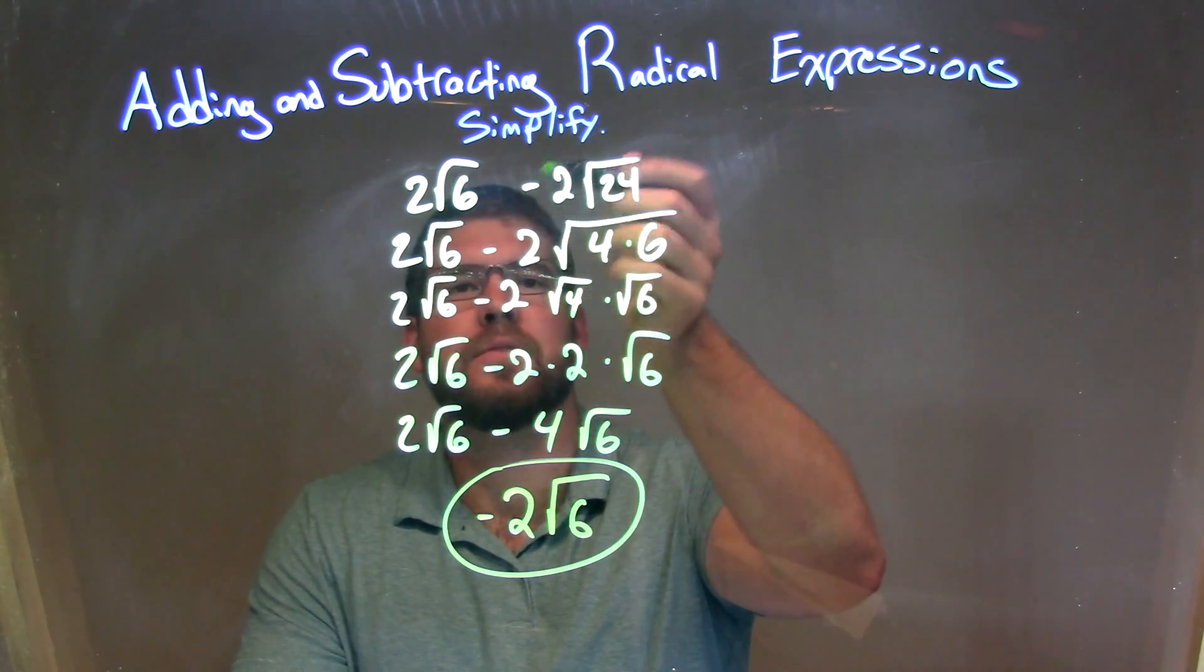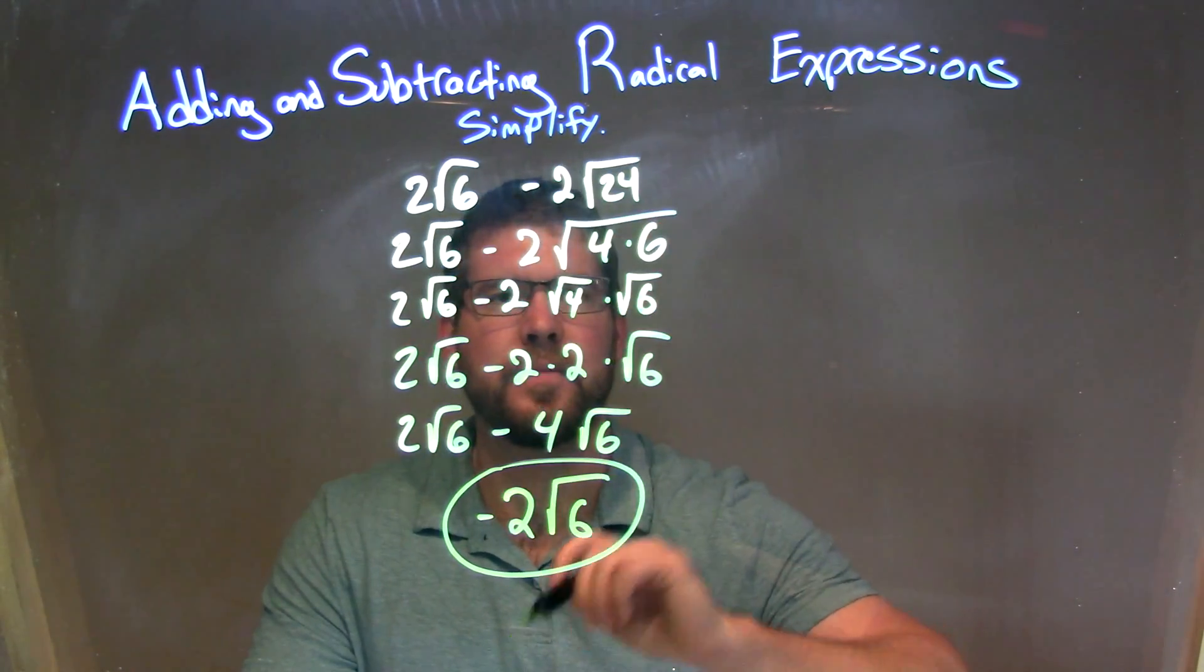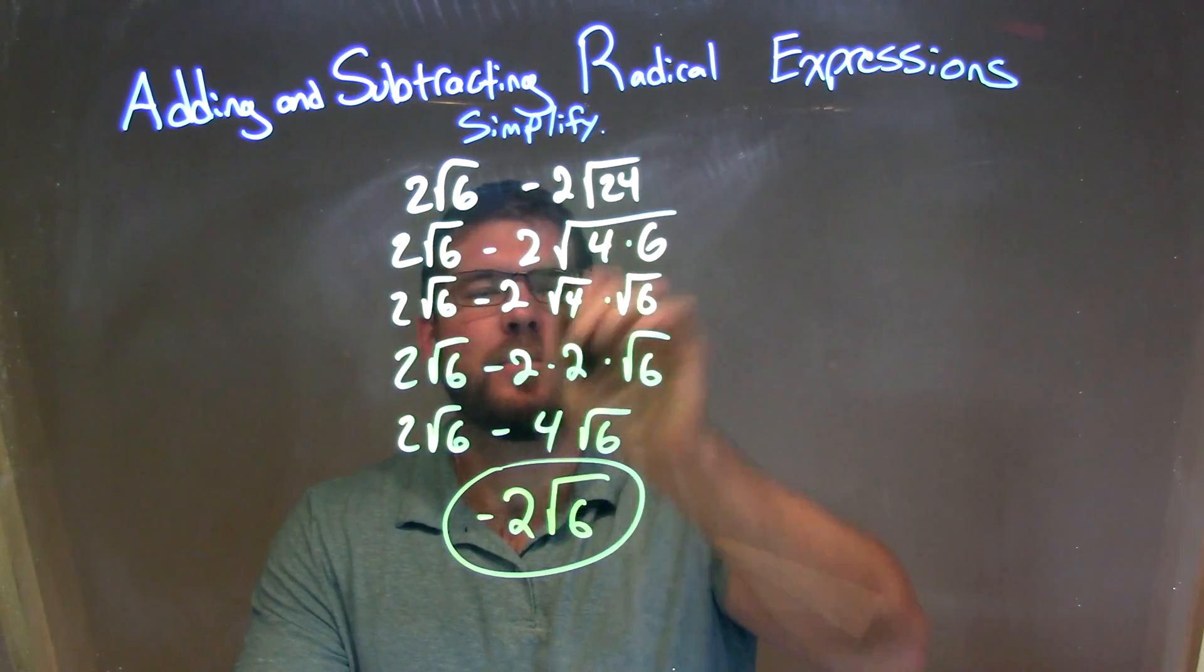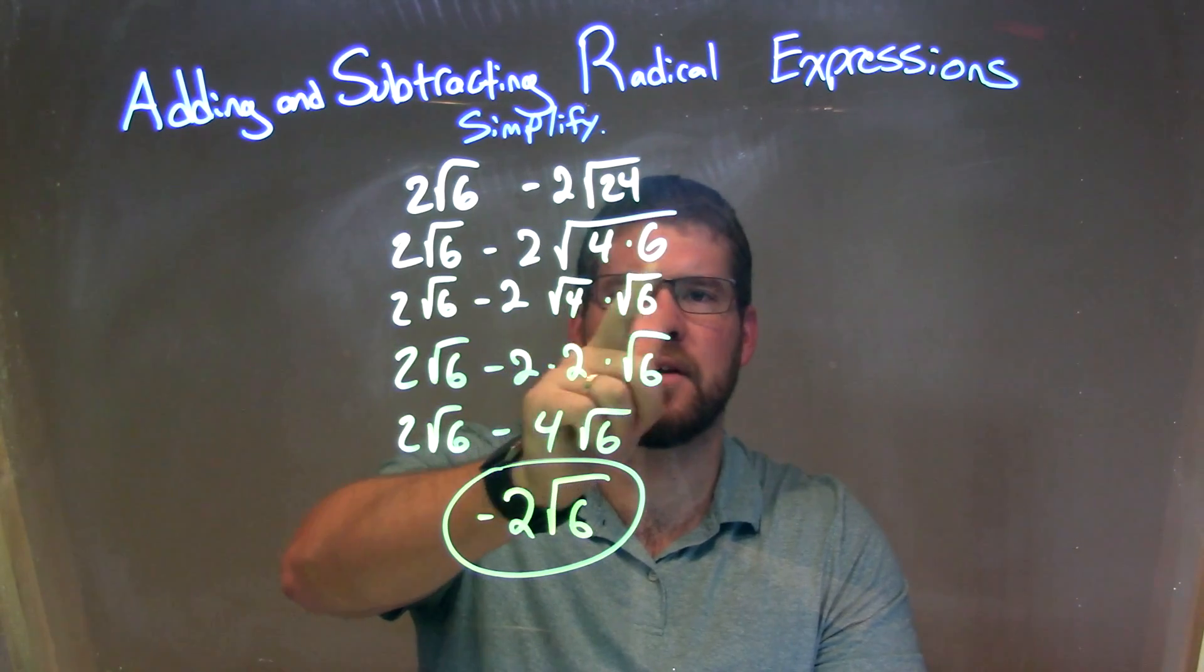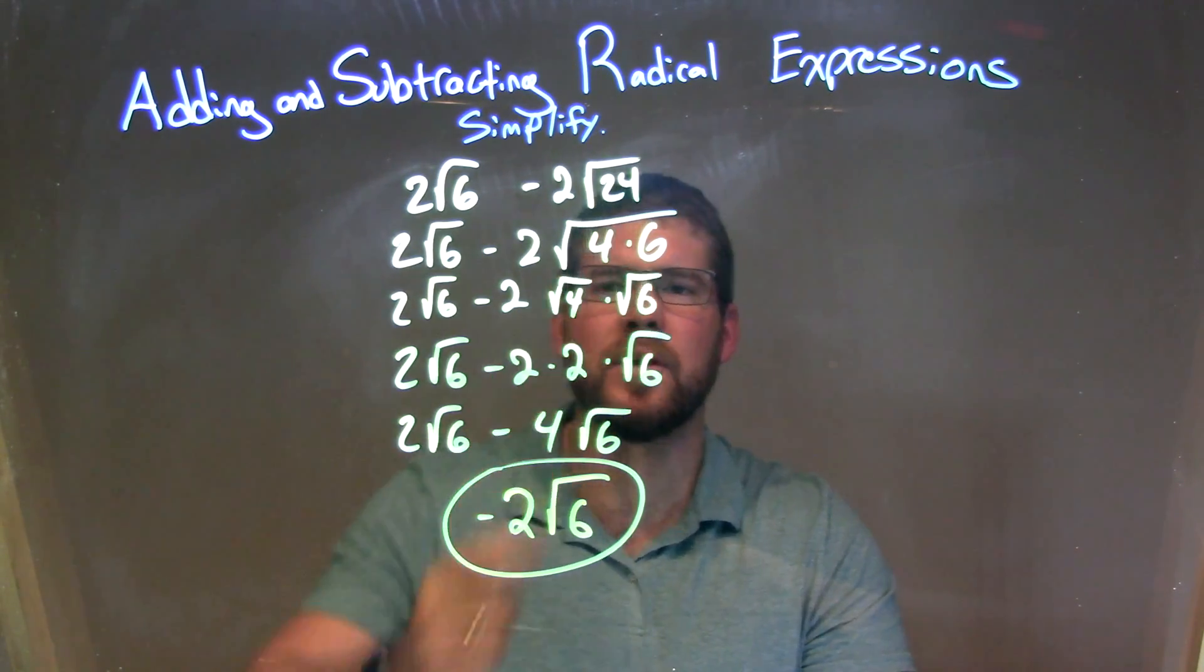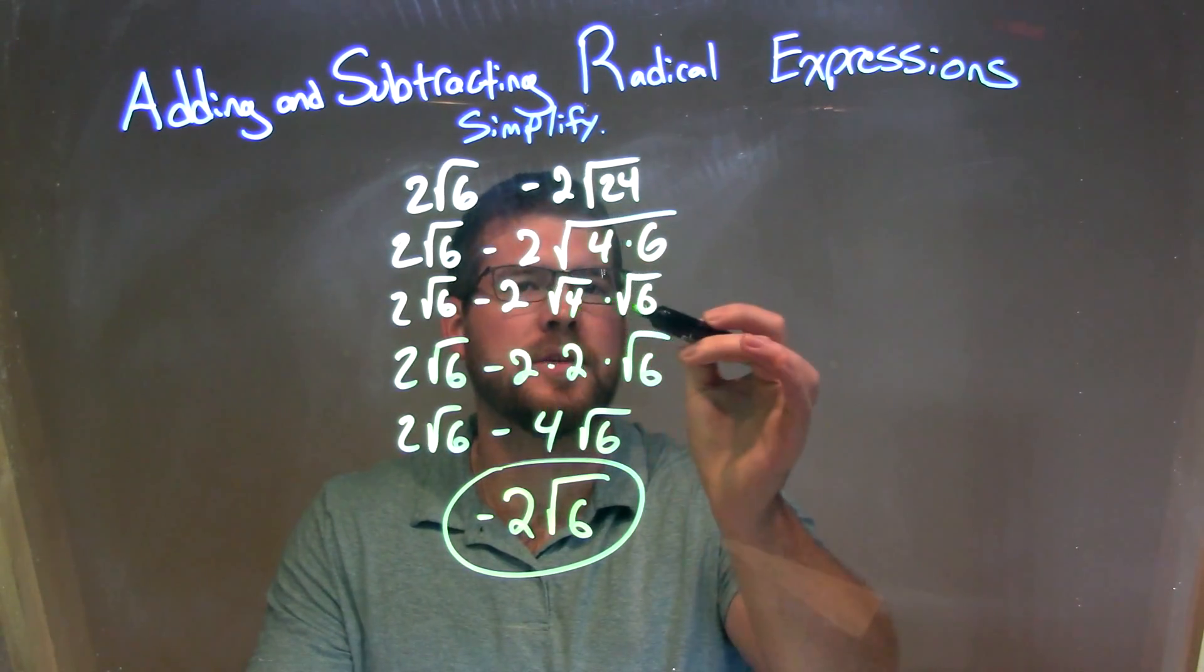So let's recap. We're given 2 square root of 6 minus 2 square root of 24. So I wanted to see if I could get these to be the same square root as the square root of 6 specifically. Well, 24 is 4 times 6, so I just broke it out like that. Then I can rewrite this to have two different square roots: the square root of 4 times the square root of 6.